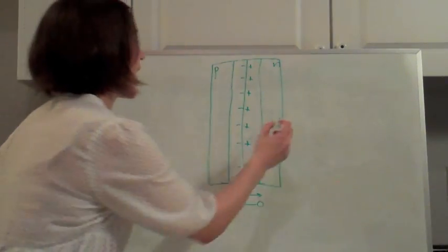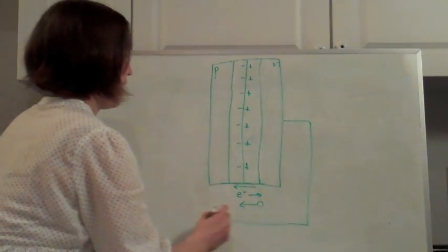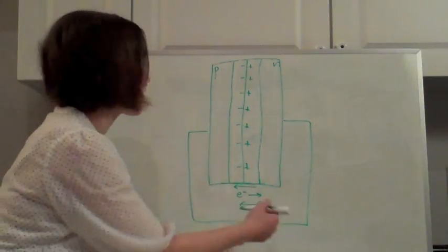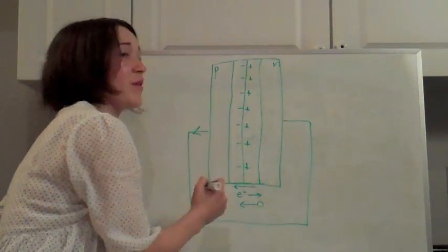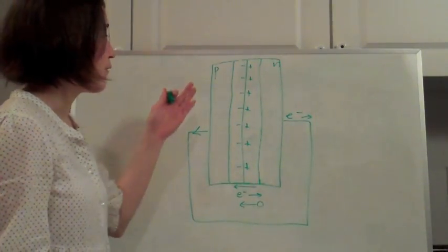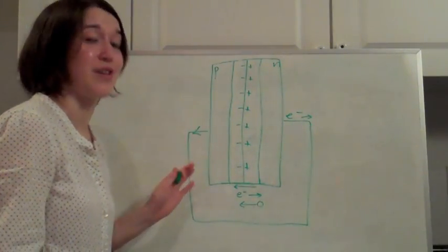And if you put contacts on each side of that, it will allow current to flow. And because current is a flow of positive charges, the current will flow this way. But the electrons will just flow this way. So now we have photo-generated electric current.